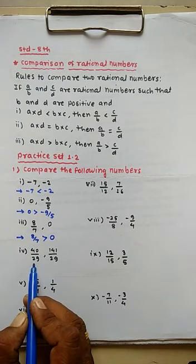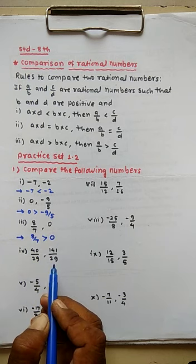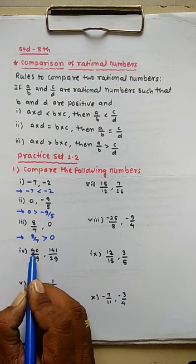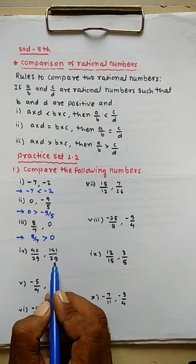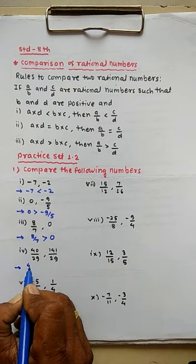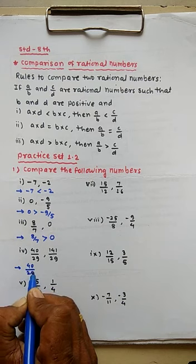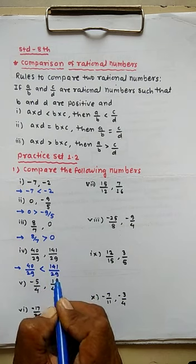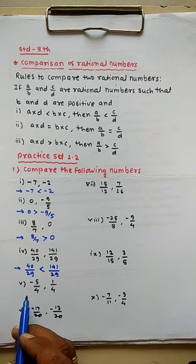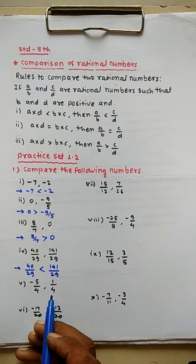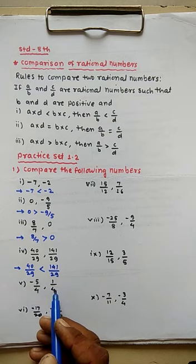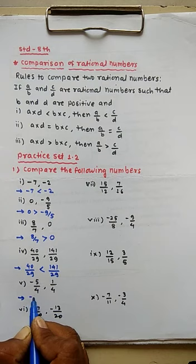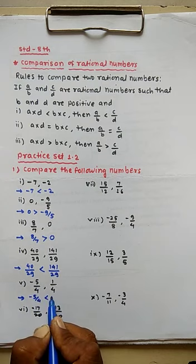Fourth example: 40 divided by 29 and 141 divided by 29. The denominators are equal, so compare numerators. The second number is greater: 40 divided by 29 is less than 141 divided by 29. Fifth example: minus 5 upon 4 and 1 upon 4. The first number is negative, the second is positive, so minus 5 upon 4 is less than 1 upon 4.